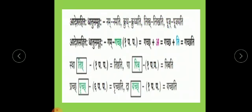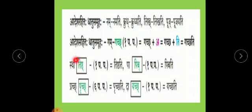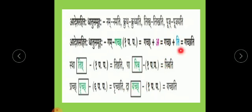For information, some roots have Adesh — meaning the root form changes. In that case, we take the changed root form to make the verb. For example: Gama (Gachati) — Gama becomes Gachha, so Gachha + A + Ti = Gachati. Stha (Tishthati) — Stha becomes Tishtha, so Tishtha + Ti = Tishthati. Pa (Pibati) — Pa becomes Piba, so Piba + Ti = Pibati. Da (Yachati) — Da becomes Yachha, so Yachha + Ti = Yachati.